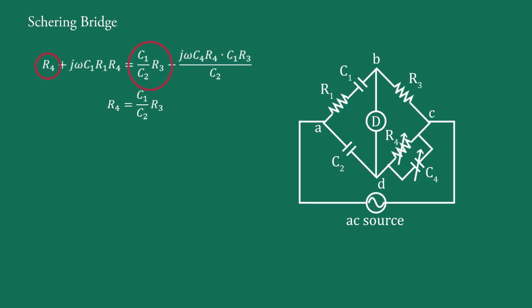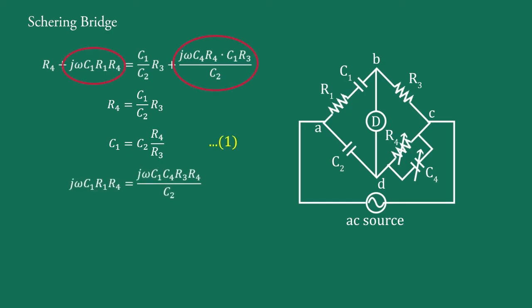Comparing real parts: R4 = (C1/C2)·R3, therefore C1 = C2·R4/R3 — this is Equation 1. Comparing imaginary parts: jωC1·R1·R4 = jωC1·C4·R3·R4/C2. Cancelling jωC1·R4 from both sides gives R1 = (C4/C2)·R3 — this is Equation 2.